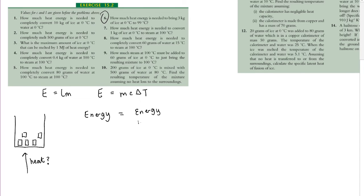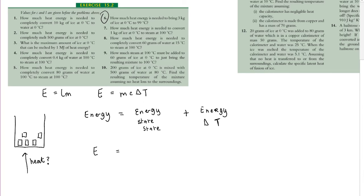The energy required equals the energy needed to change state — ice at 0°C changing into water — plus the energy needed to then increase the temperature. We substitute in E = LM for the change of state and E = MCΔt for the change in temperature.